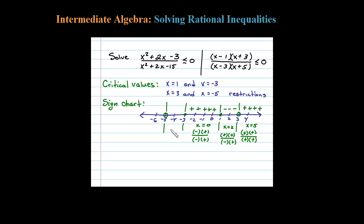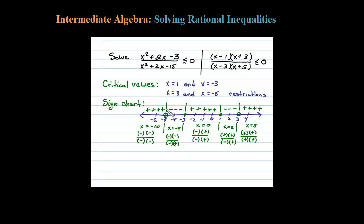Continuing the test with x equals negative 4: negative 4 minus 1 is negative, negative 4 plus 3 is negative, negative 4 minus 3 is negative, and negative 4 plus 5 is positive — three negatives makes a negative result. We can't assume this always alternates, so test each interval. Testing x equals negative 10: negative 10 minus 1 is negative, negative 10 plus 3 is negative, negative 10 minus 3 is negative, and negative 10 plus 5 is negative — four negatives yields a positive result. This completes our sign chart.